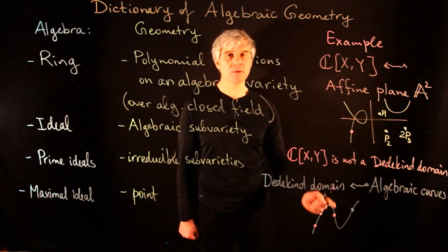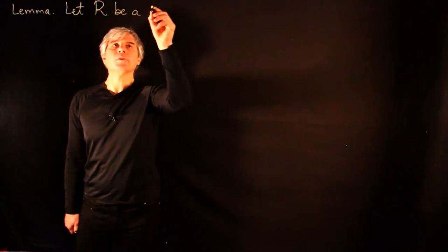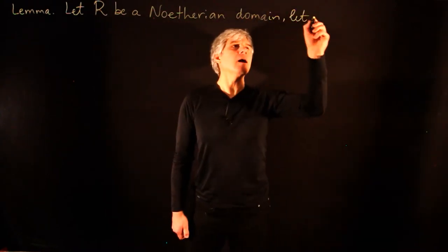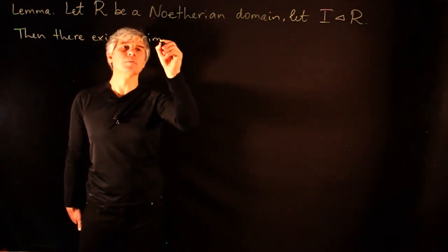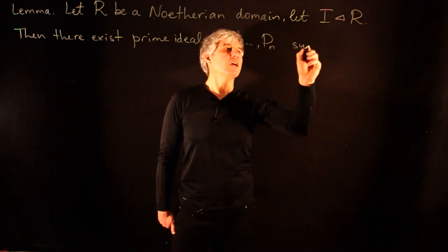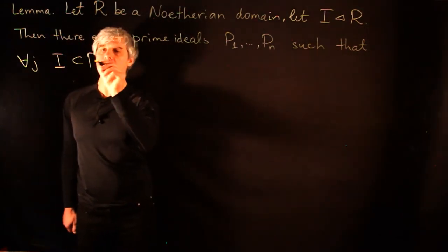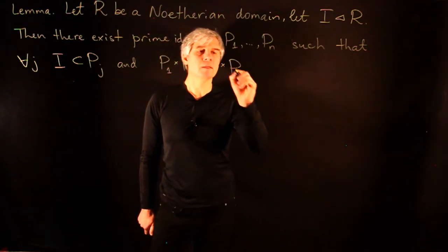It is useful to keep this geometric interpretation in mind when discussing algebraic properties of Dedekind domains. Let us state our first lemma. Let R be a Noetherian domain, and let I be an ideal in R. Then there exist prime ideals P₁ through Pₙ such that for all j, I sits inside Pⱼ, and the product P₁·P₂·…·Pₙ sits inside I.